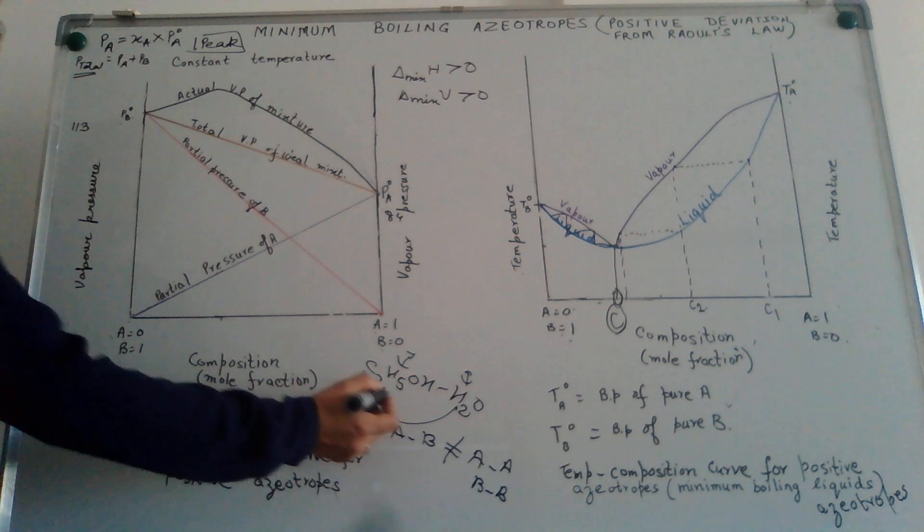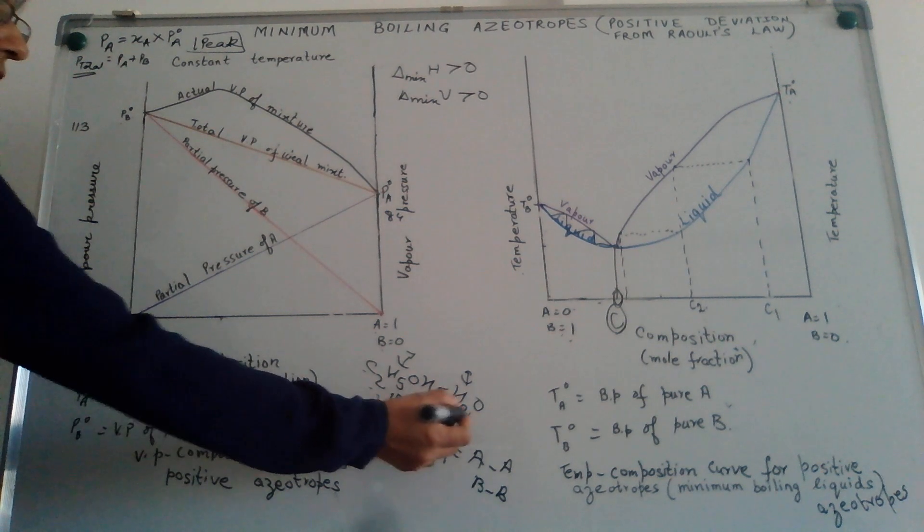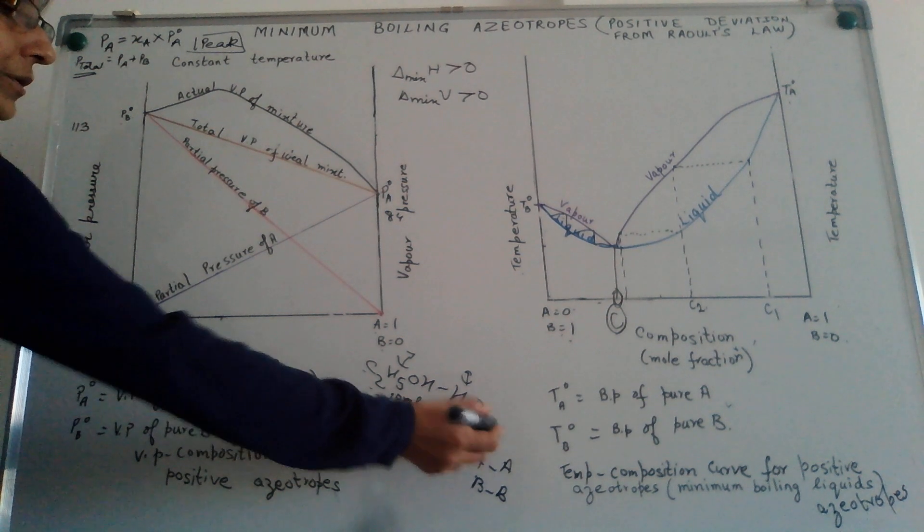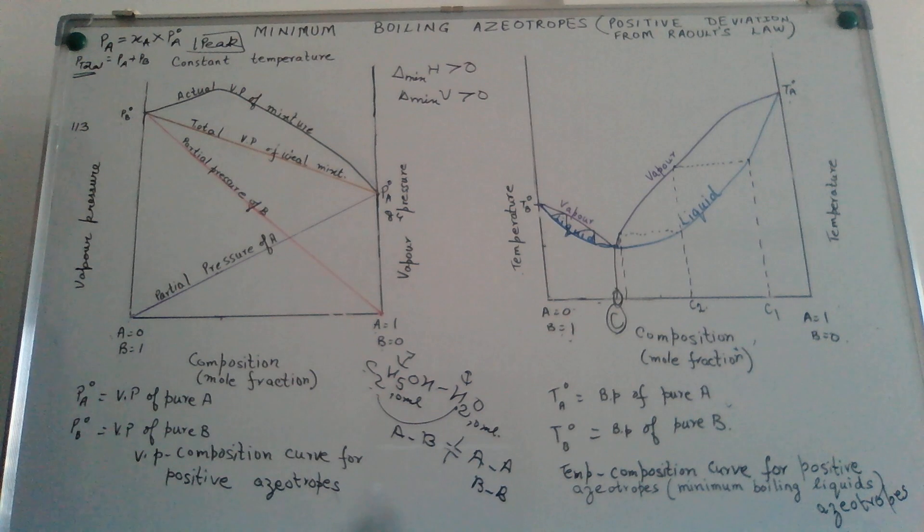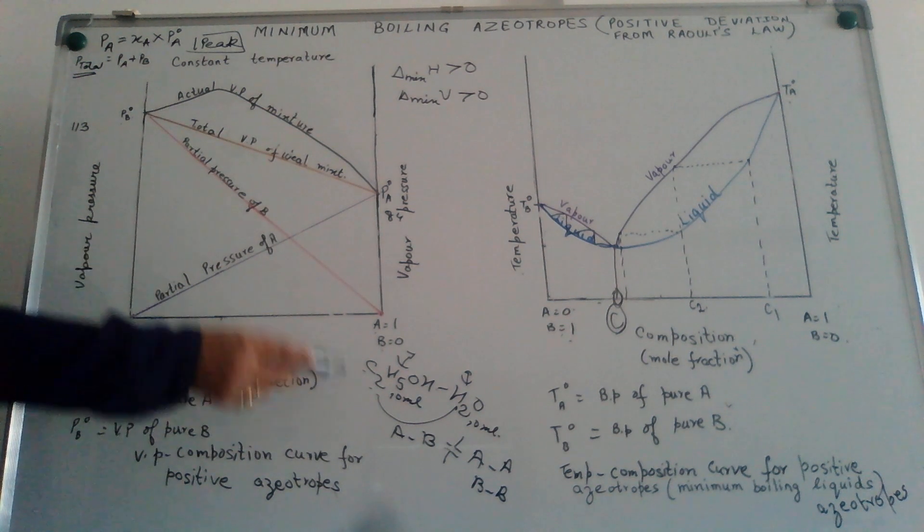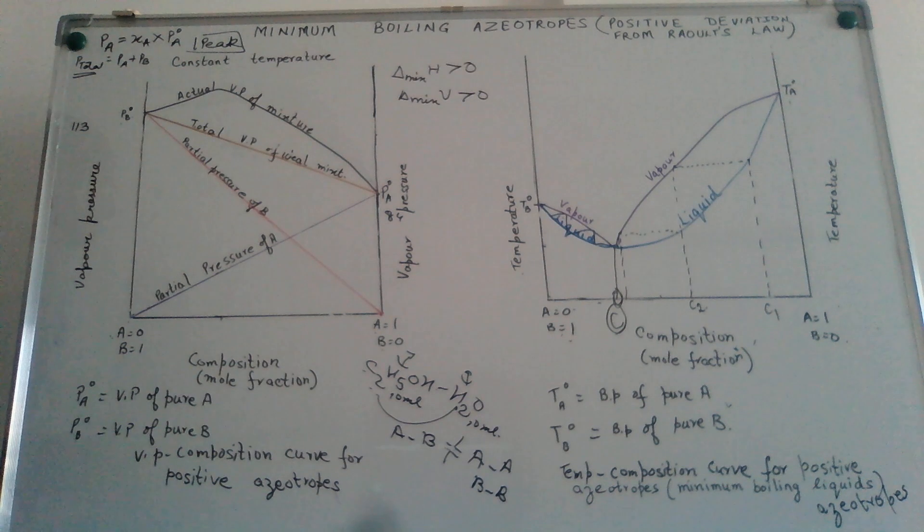There will be an increase in the volume when such liquid mixtures are mixed with each other. So, let us suppose you start with 10 ml of ethanol and 10 ml of water. When you mix them, ideally you should have 20 ml. But what happens is, here the volume becomes greater than 20 ml.